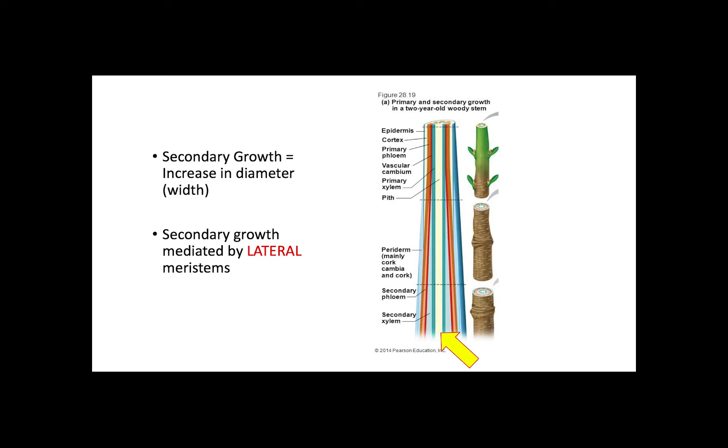However, if you see the yellow arrow, you will notice that secondary growth takes place from bottom to top, being the parts closer to the ground the first to develop secondary tissues.